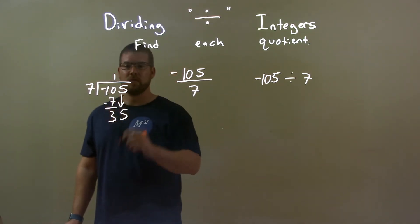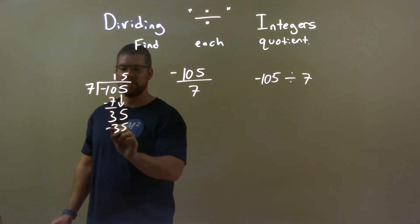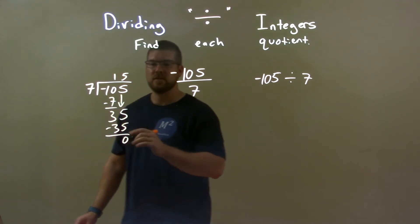Now, 7 goes into 35, 5 times, and that's actually evenly, because 5 times 7 is 35. Subtract. We got a 0. We're done.